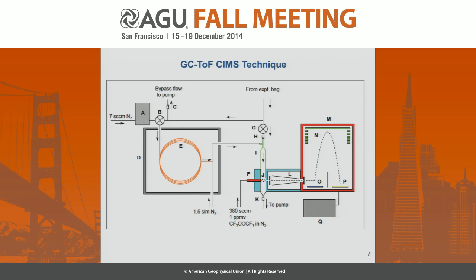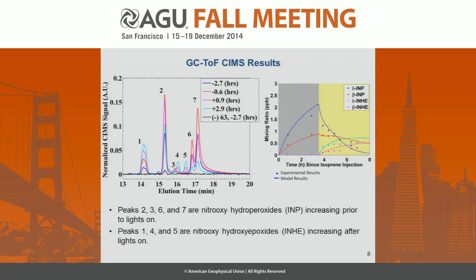In GC-TOF-SIMS, we cold-trap the gas-phase species onto a GC column, then slowly ramp the temperature and detect what elutes and at what time using the TOF-SIMS. This gives us chromatograms to separate isobaric species. Here are the chromatograms for mass MDZ negative 248, which is the mass at which both the hydroperoxides and the epoxides appear. The chromatograms are plotted over the course of the experiment, with blue and red representing before lights on, and magenta and cyan after lights on.